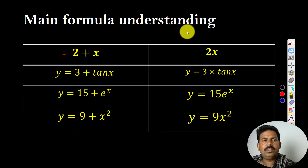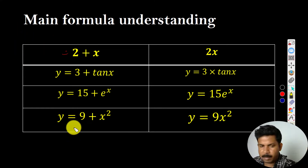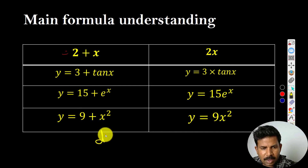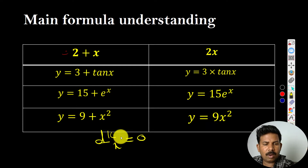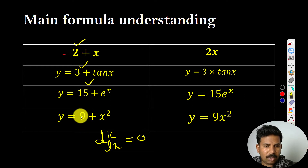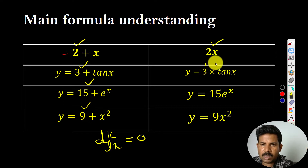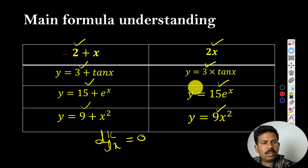Let me show you how to use the formula. d/dx is equal to here, and then 0 — that means the derivative of a constant is 0. Here 2 is a constant, 3 is a constant, 15 is a constant, 9 is a constant. We observe: 2, 3, 15, 9 are all constants.